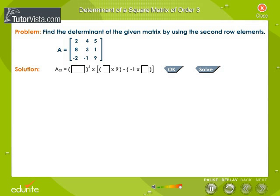Find the cofactors A21, A22, and A23. Then calculate the determinant of the matrix. Use the OK button to check your answer and the solve button if you are unable to solve the problem.